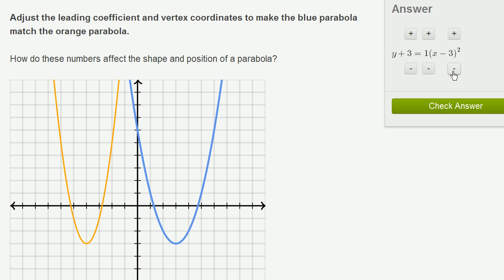So if we subtract a value here, it shifts it to the right. And if we add values here, it shifts it to the left. So just like that, it looks like I've been able to get our vertices to coincide.